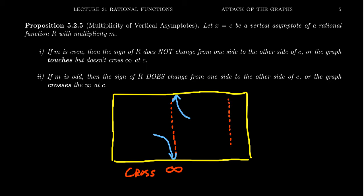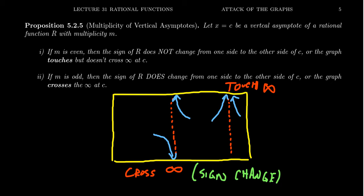Another thing that can happen with a rational function near its vertical asymptote is that you can touch infinity but then come back — we say that we touch infinity. We don't cross the screen; we just touched it, kind of bounced off infinity and came back. So when a rational function approaches its vertical asymptote, one of two things happens: you either cross infinity, which suggests a sign change from positive to negative or negative to positive, or you touch infinity, in which case there is no sign change whatsoever.